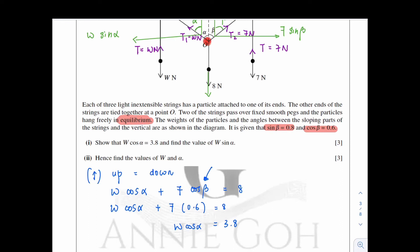As for the second part of the question, we are supposed to find the value of w sin alpha. So w sin alpha is in the x direction. So let's form an equation in the x direction. For the x component, left should be equals to the right because everything is in equilibrium. It's not moving. So the left hand side force, there is w sin alpha only. As for the right hand side force, there is 7 sin beta. So we just need to sub in the sin beta's value as given in the question, 7 times 0.8, so it is 5.6. Which means w sin alpha is equals to 5.6. This is how we solve part 1.